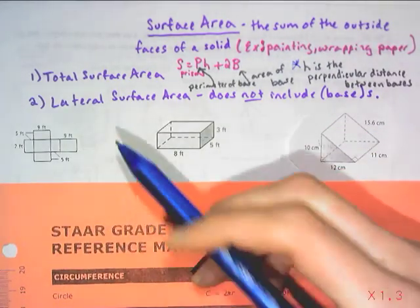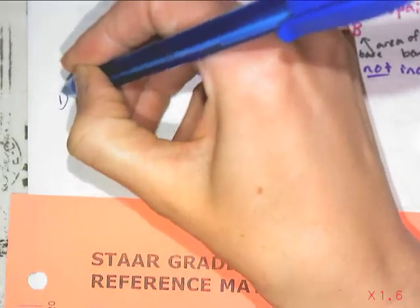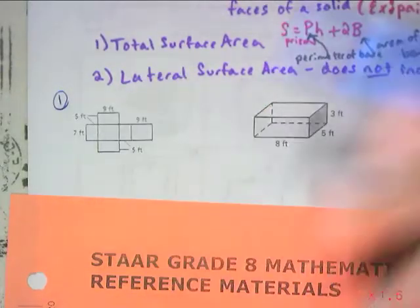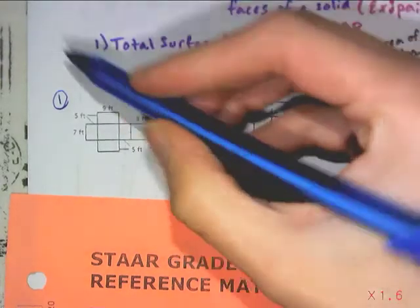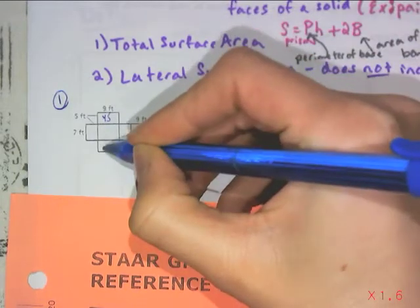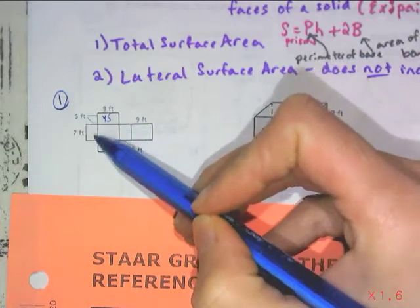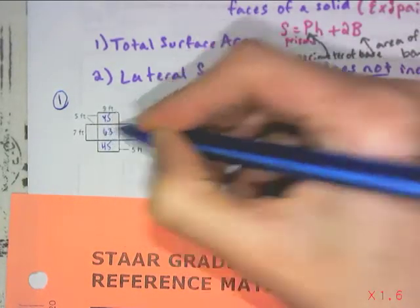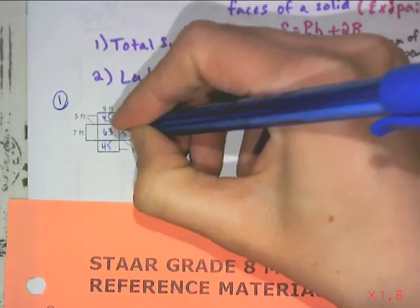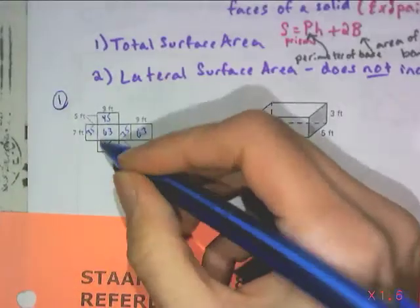It's pretty easy if you look at example number one, which gives you this rectangular prism in net form, because you can see all six of the faces at once. If you're given a net like this, you can go ahead and find the area of all the faces and add them up. Up here you have a 9 by 5, so there's a 45, which is parallel and congruent to another 45. The one in the middle is a 9 by 7, so 9 times 7 gives you a 63. This one would be the same.